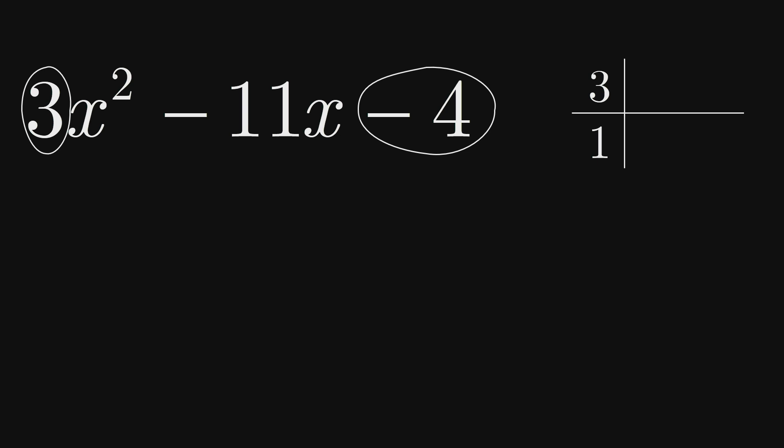If 2 numbers multiply to negative 4, we know that 1 must be positive and the other negative. I like to ignore this fact at first and just find a couple numbers that multiply to 4, say 2 and 2. The cross products here are 6 and 2. Unfortunately, even if one of these was negative, they wouldn't add to the negative 11 coefficient of x that we need.